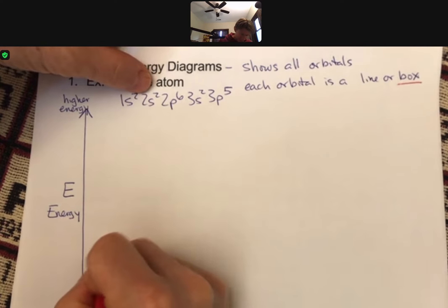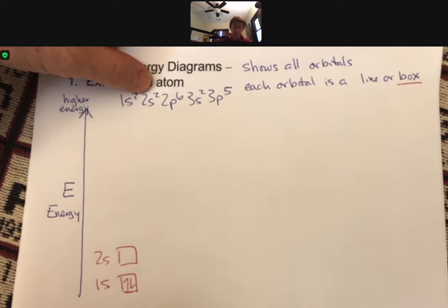Then we get to 2s. 2s is one orbital, that one orbital gets a box. There are two electrons in it, spin up, spin down, arrows.